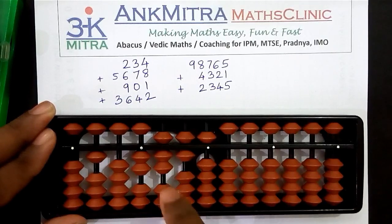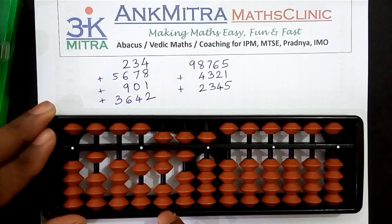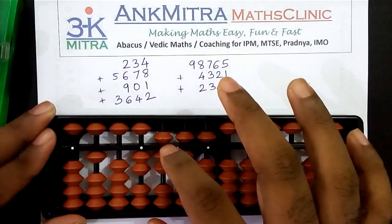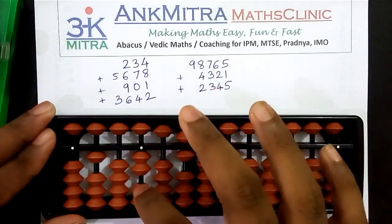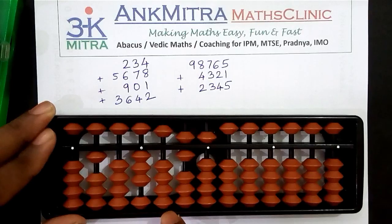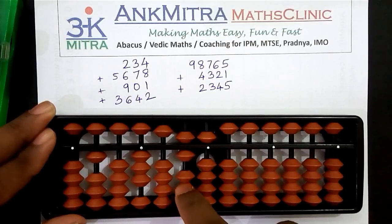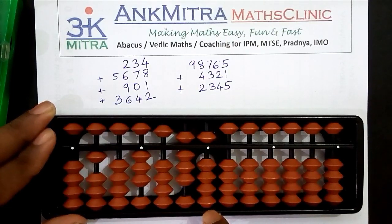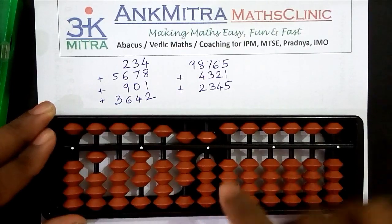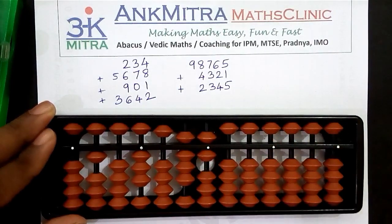Coming to the hundreds place, we need to add three. I don't have three beads available and also don't have five, so I'll use the big friend of three — big friend of three is seven — subtracting seven and adding ten on the next left rod, completing the addition of three on the hundreds place. For addition of two on the tens place, we have two beads available, done directly. On the units place, adding one is also directly possible. The addition of four thousand three hundred and twenty-one is complete.